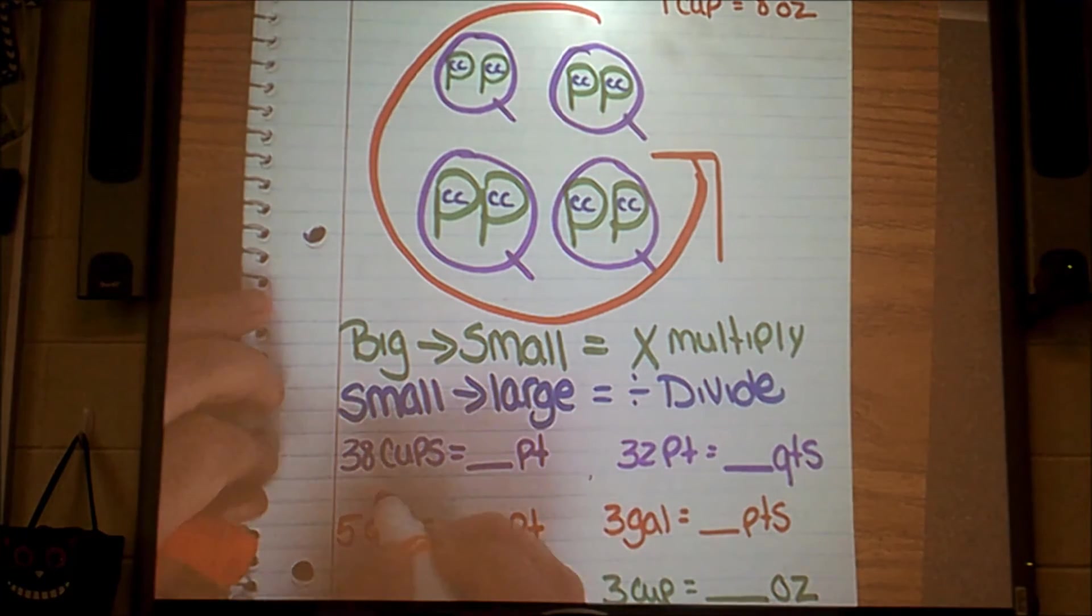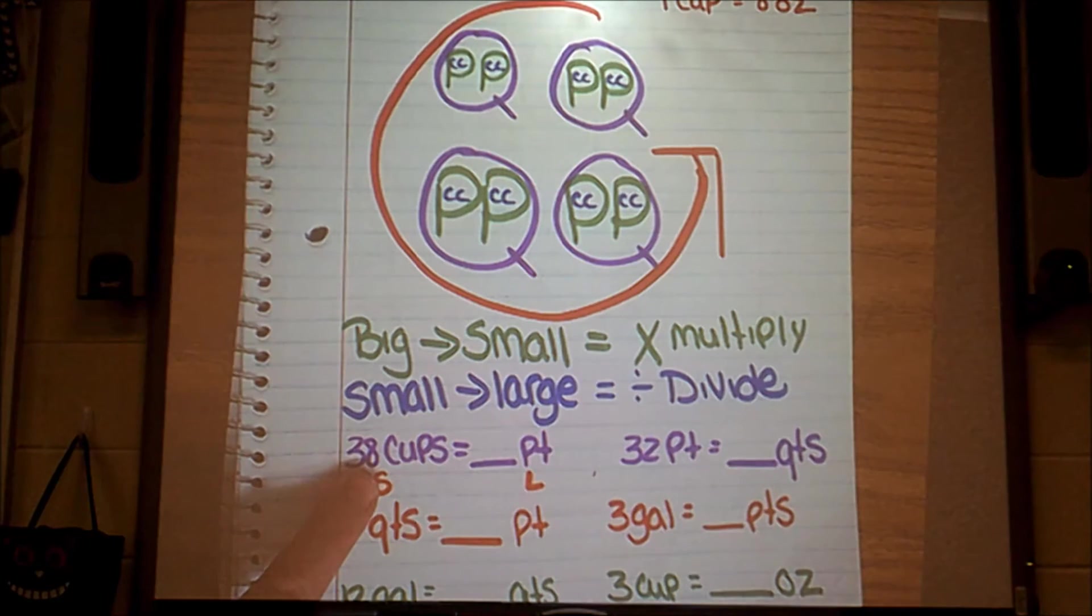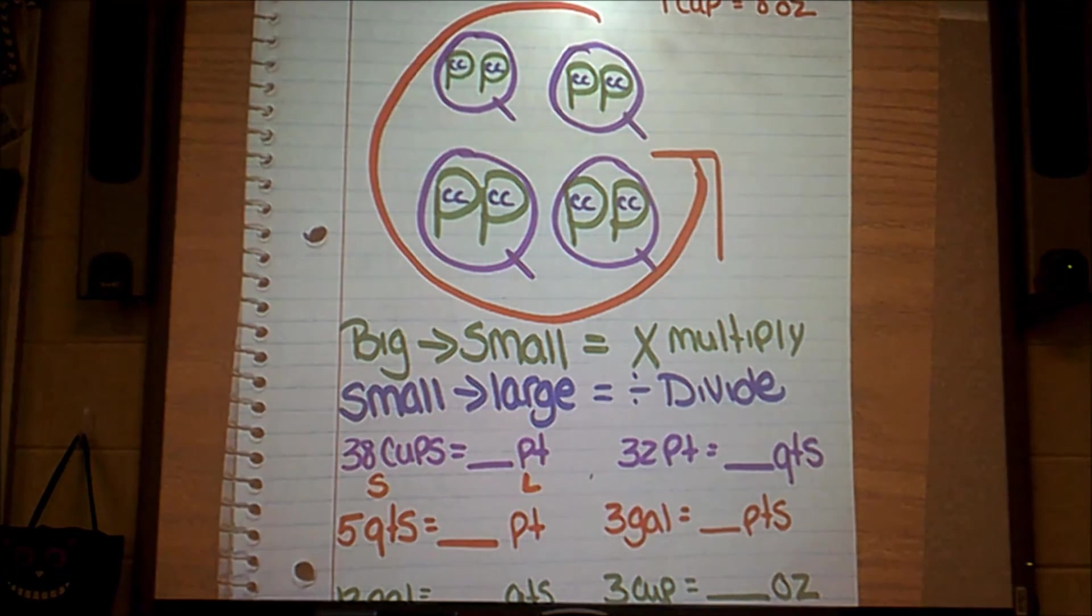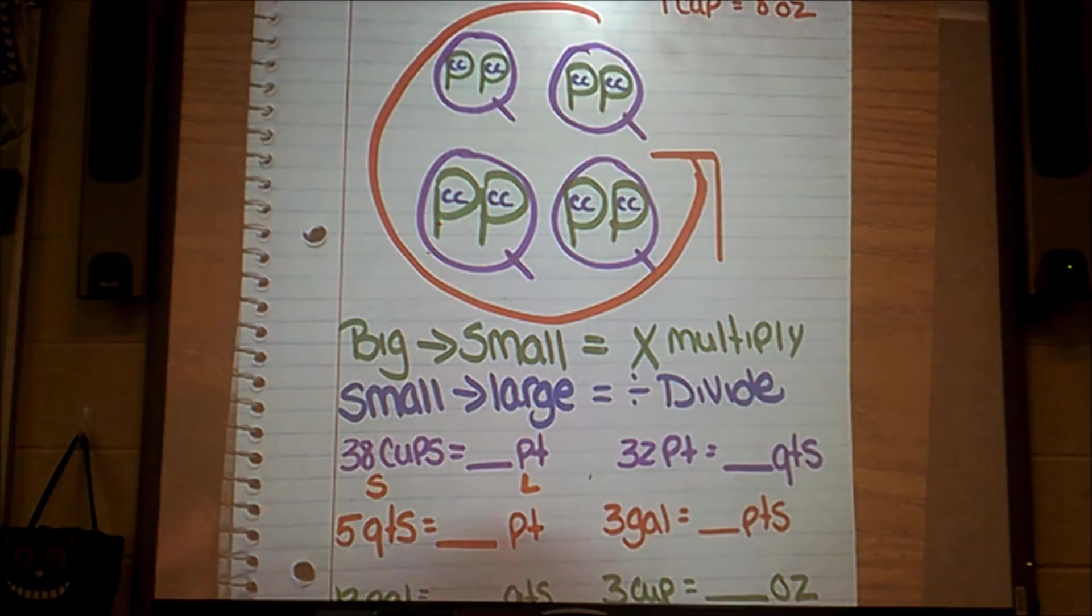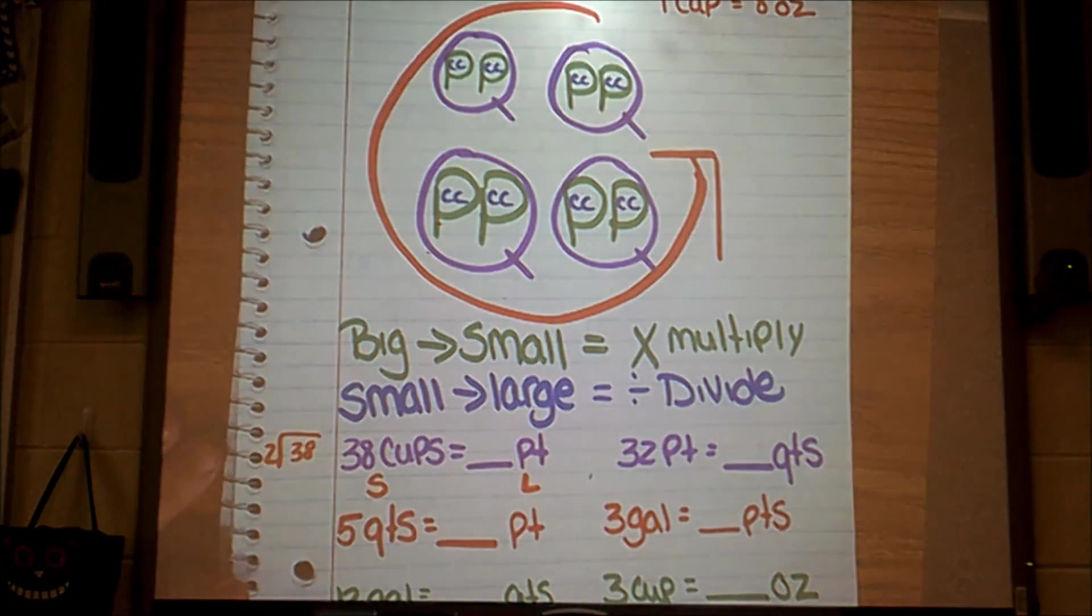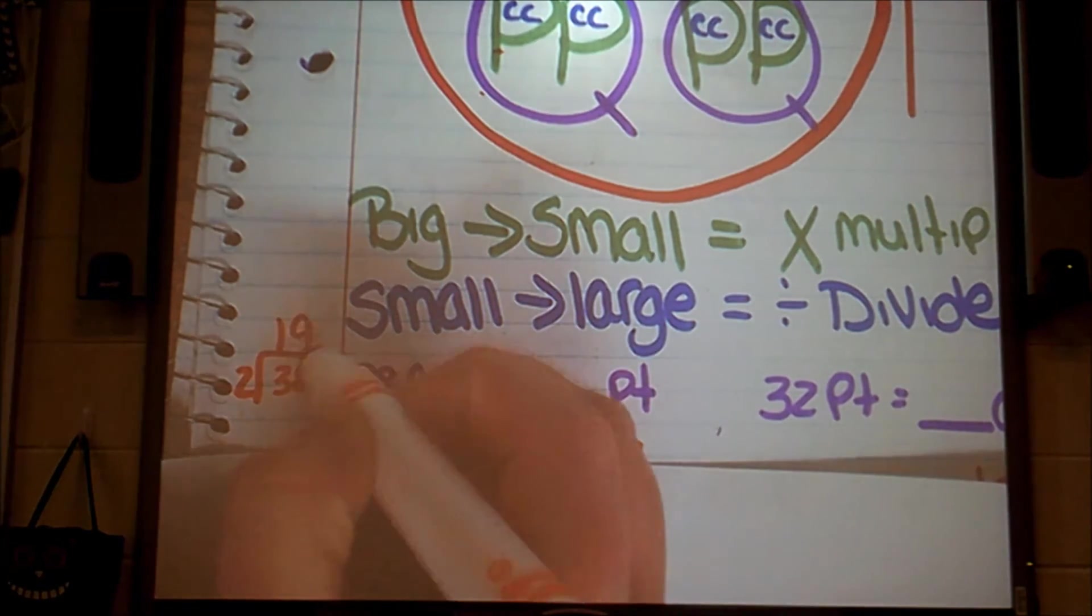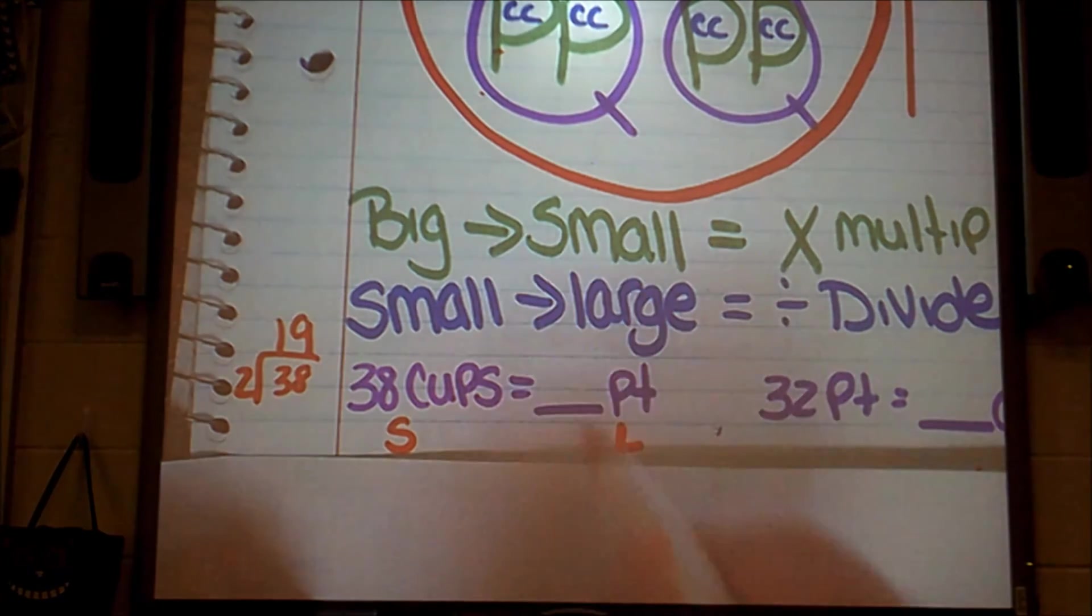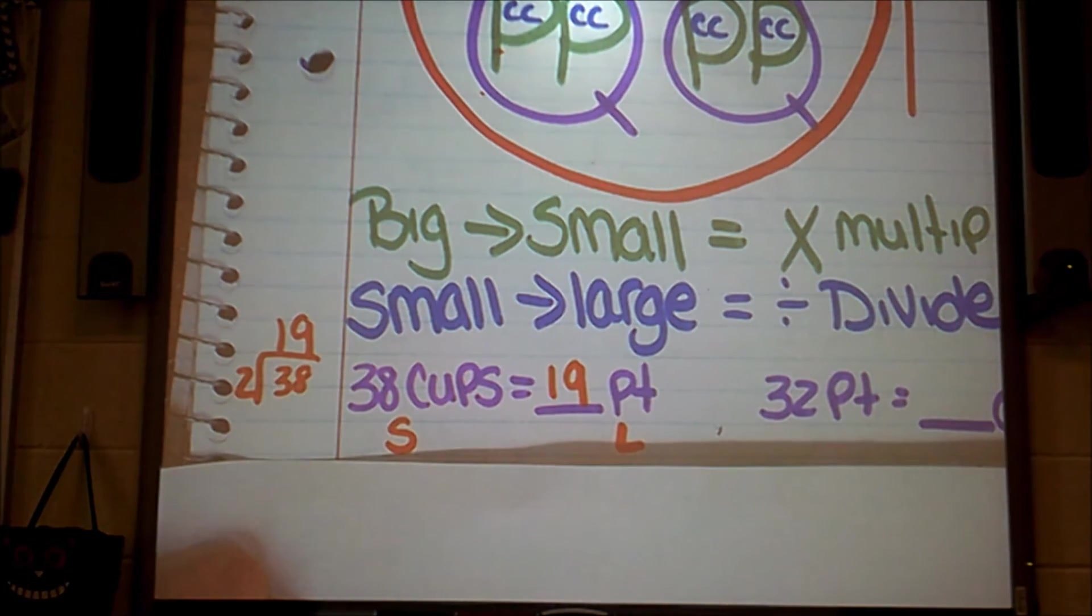So underneath I'm just going to write small, large, to remind my brain, small to large divide. So that means I'm going to be dividing the number of cups that I have, 38, divided by how many cups are in one pint. Well, according to my conversion here, I can see that there are two cups in one pint. So I'm going to divide 38 by 2. So when I solve this division problem, I get a quotient of 19. So that means I can convert my 38 cups into 19 pints.